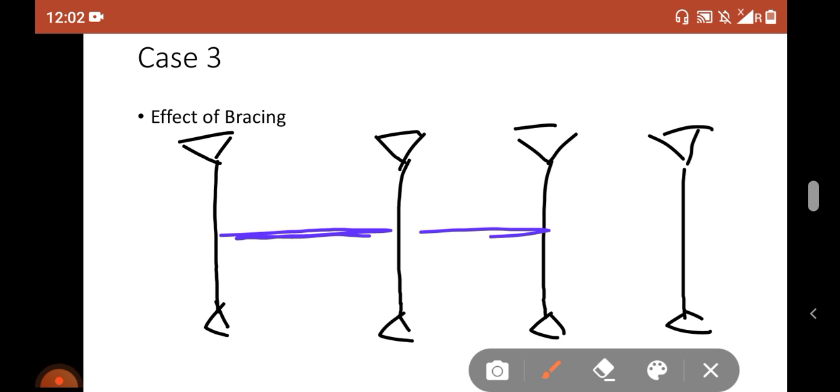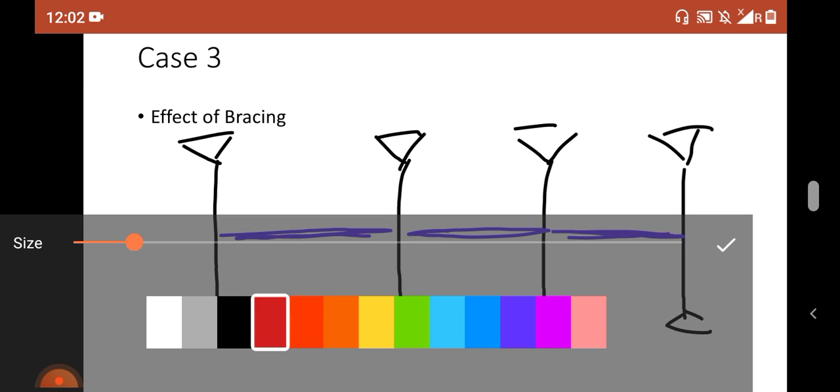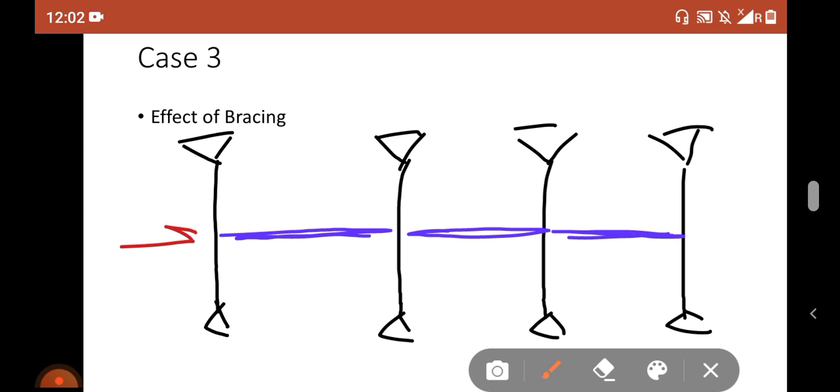we have already provided a lateral tie like this one. Let's try this one. The main function of this tie is to redistribute this lateral load marked in red color.